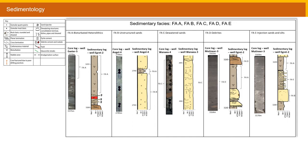The first key stage of this study was to manually interpret the Angel Formation facies from associated sedimentary logs. This is important as the facies interpretations act as a means for the algorithms to test their learning and predictions against in order to determine accuracies. There were five distinct facies interpreted which include A bioturbated heterolithics, B unstructured sands, C dewatered sands, D debrites and E injection sands and silts.